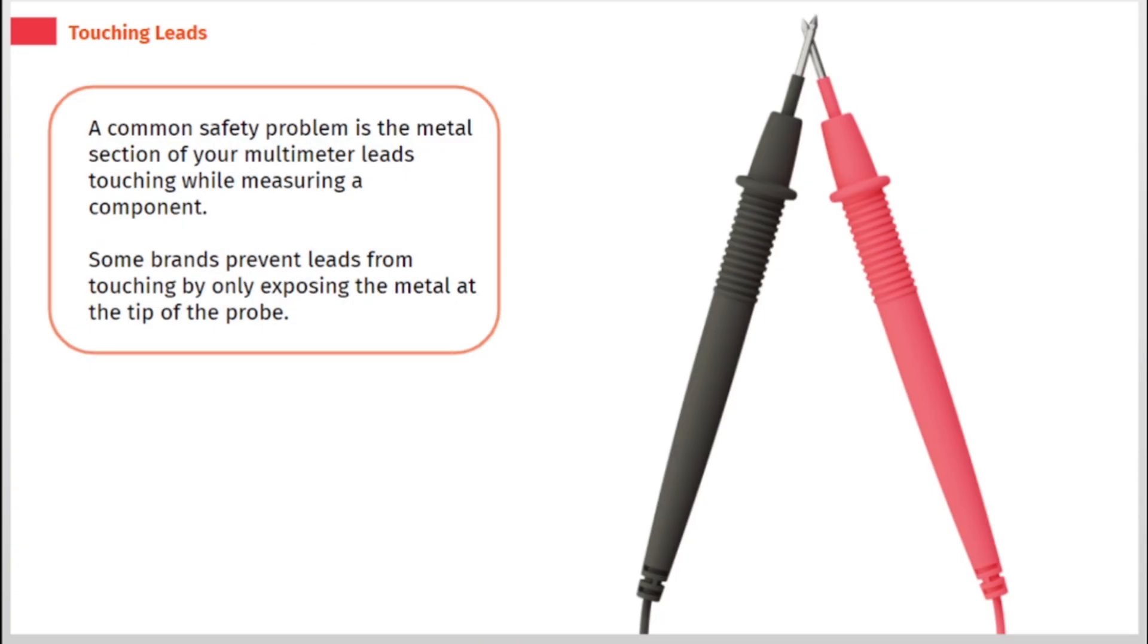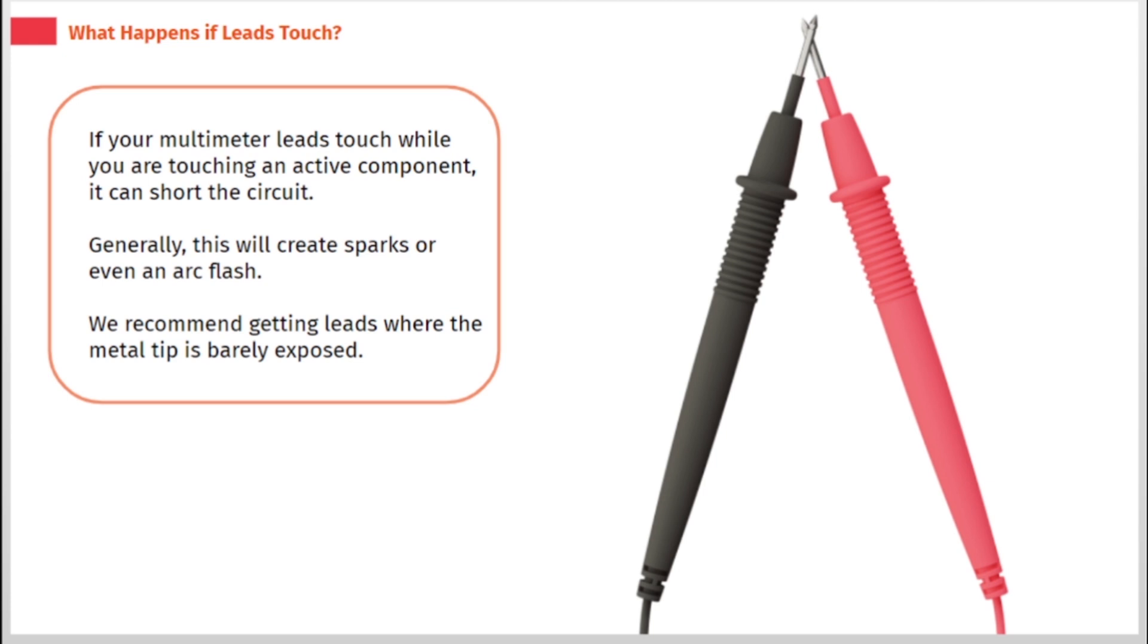A common safety problem is the metal section of your multimeter leads touching while measuring a component. Some brands prevent leads from touching by only exposing the metal at the tip of the probe. If your multimeter leads touch while you are touching an active component, it can short the circuit. Generally, this will create sparks or even an arc flash. We recommend getting leads where the metal tip is barely exposed.